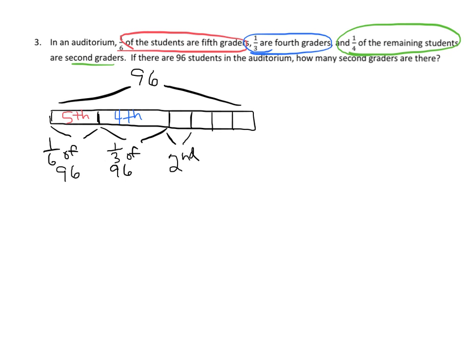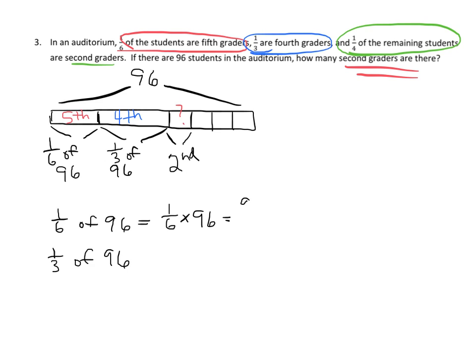The question is how many second graders there are — what is that little unit worth? First, one-sixth of 96: that's 96 divided by 6, which equals 16 fifth graders. Then one-third of 96: that's 96 divided by 3, which equals 32 fourth graders.